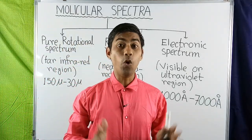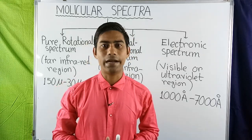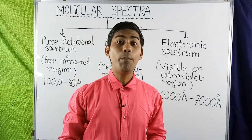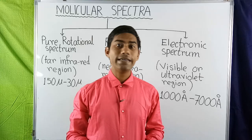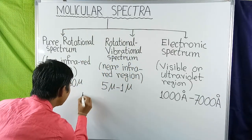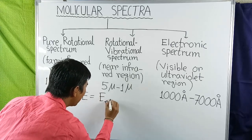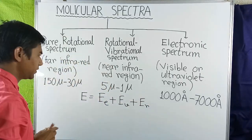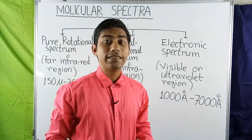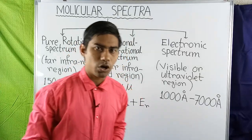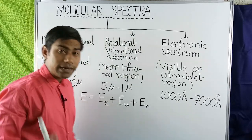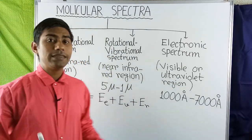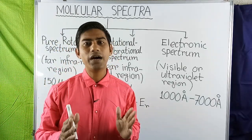The total energy of a molecule in the excited state is given by E = E_E + E_V + E_R, where E_E is the excitation energy of an electron in a molecule, E_V is the energy due to vibration of the molecule, and E_R is the energy due to rotation of the molecule.